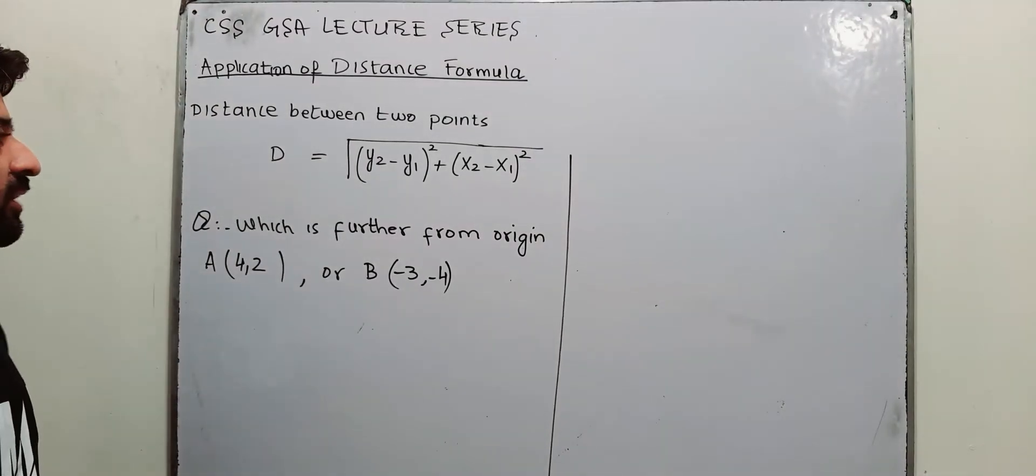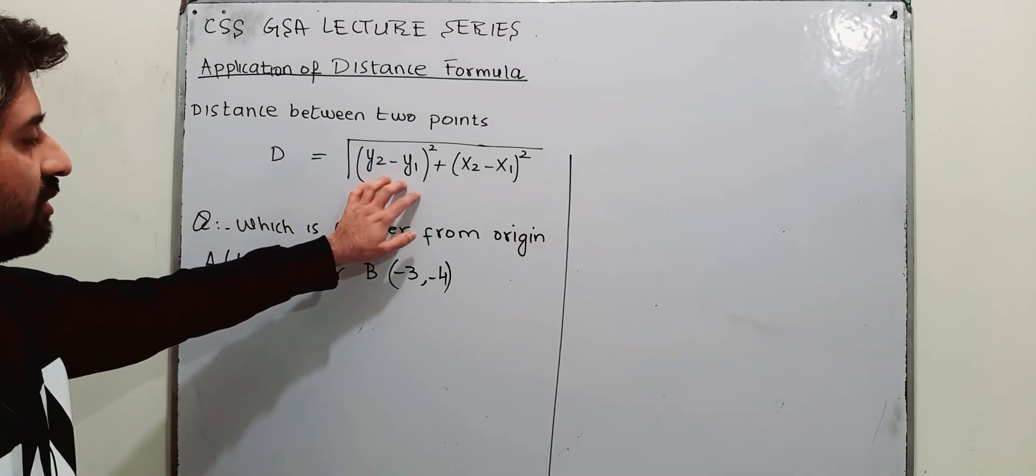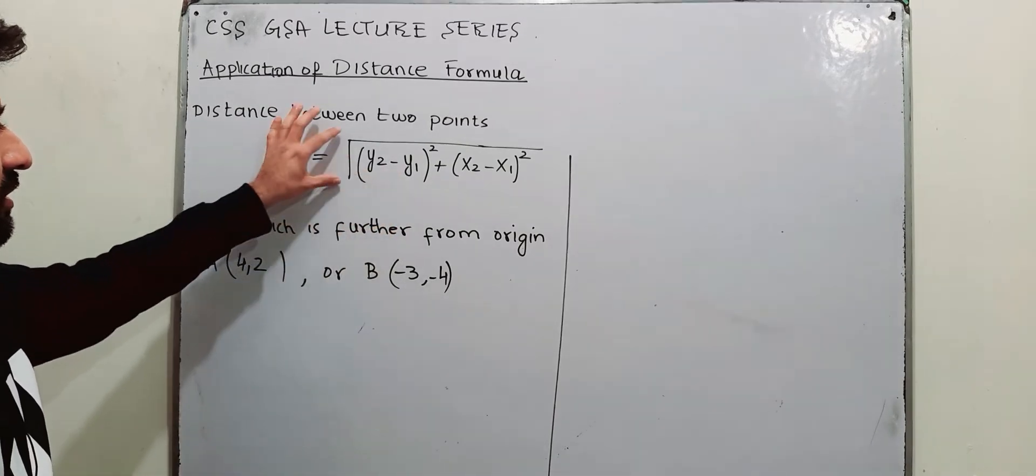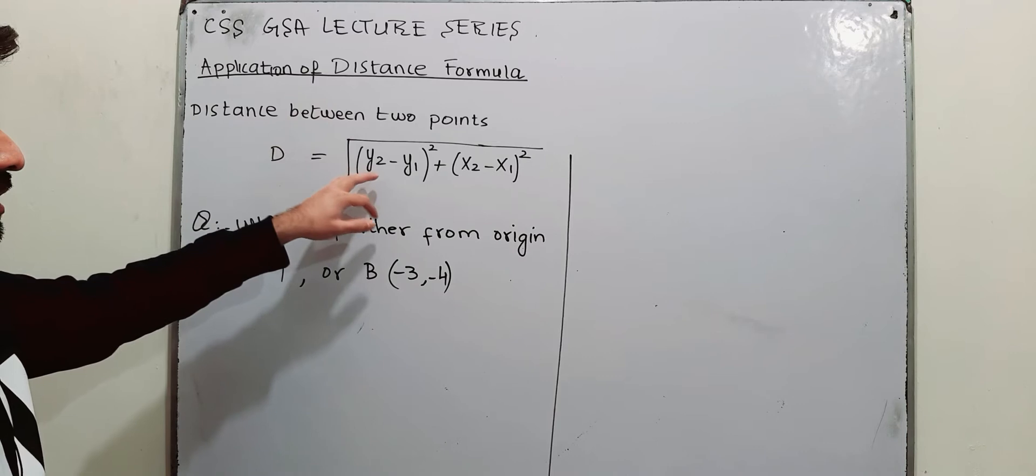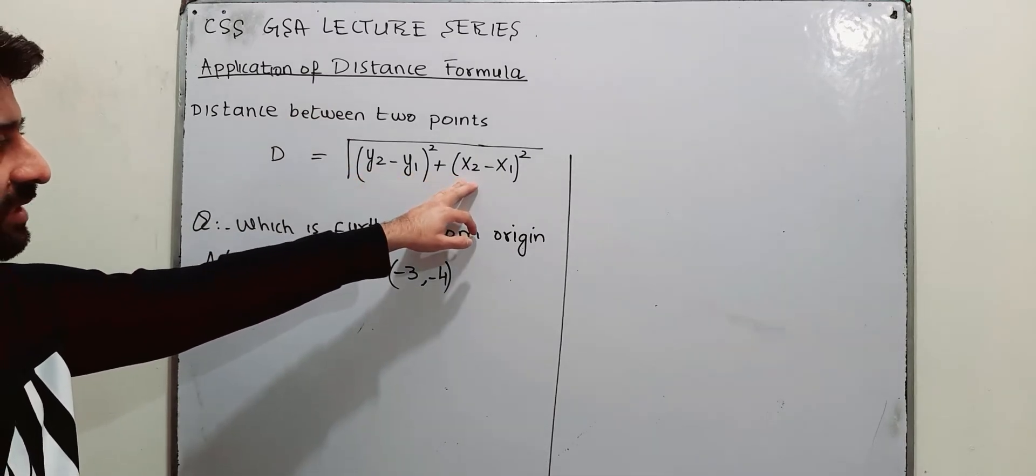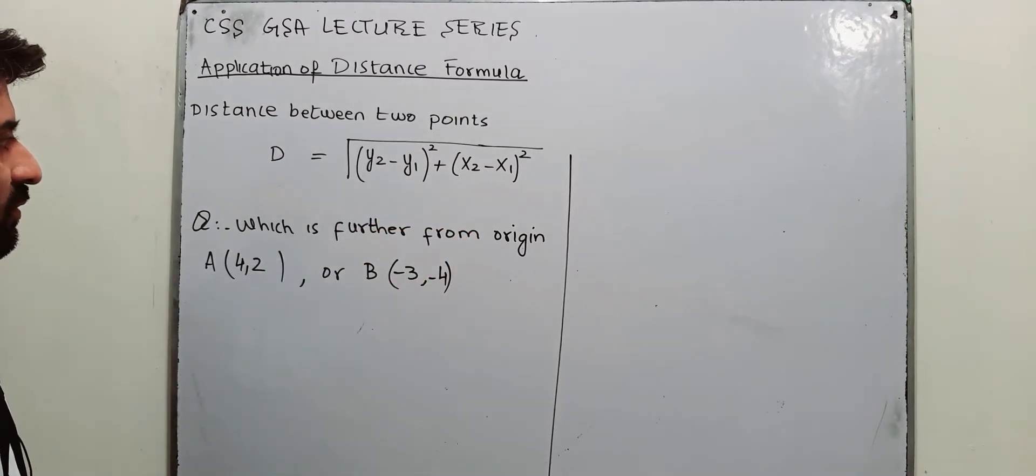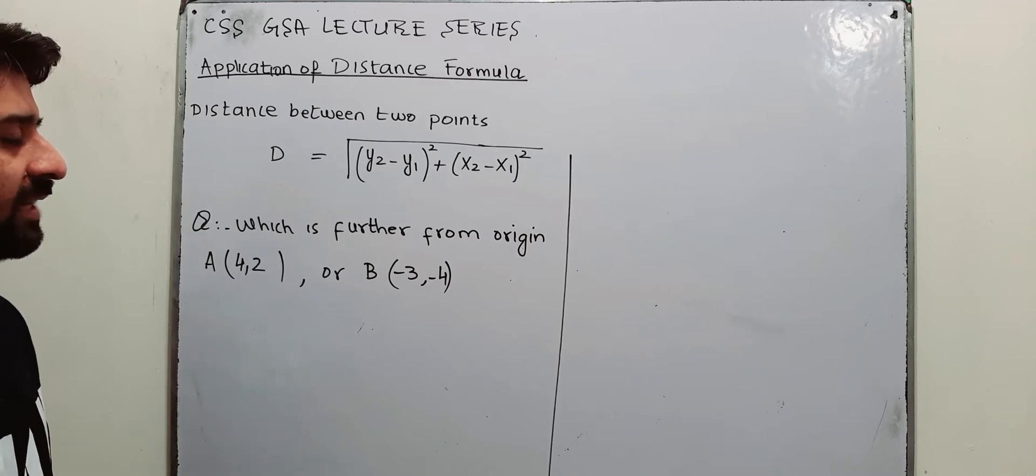Distance between two points. This is the formula you have to use to find the distance between two points. This is D equals square root of (y2 minus y1) whole square plus (x2 minus x1) whole square. Now first of all I want to define what is y2, y1 and x2, x1.